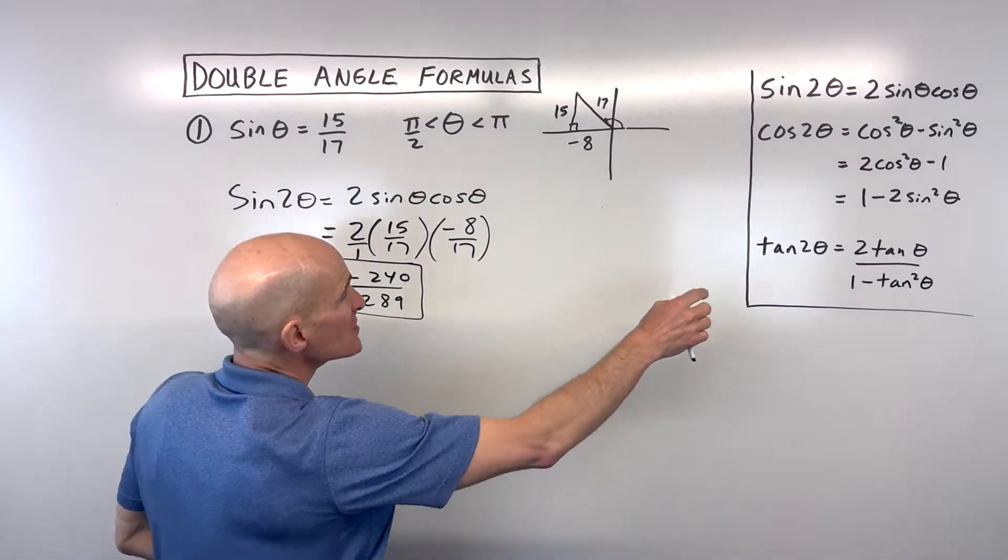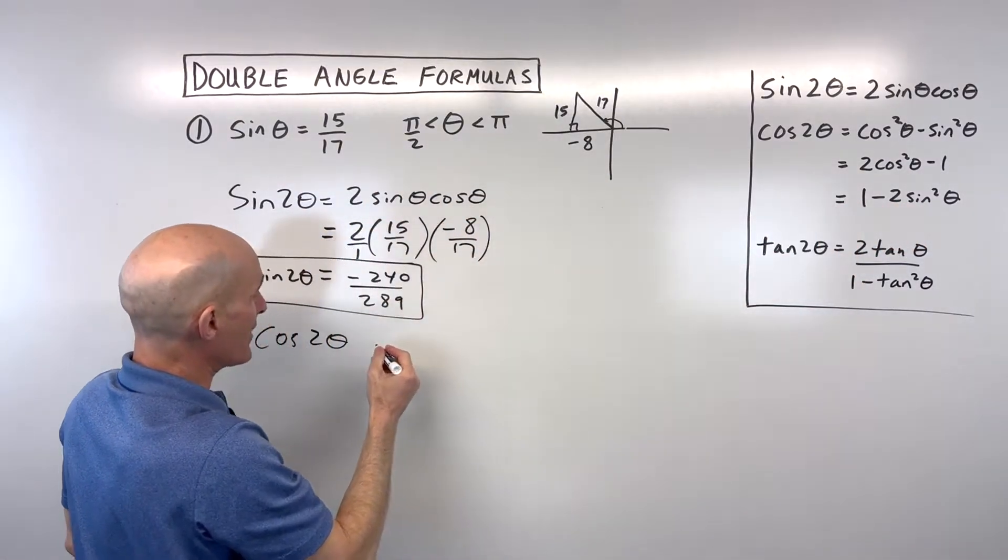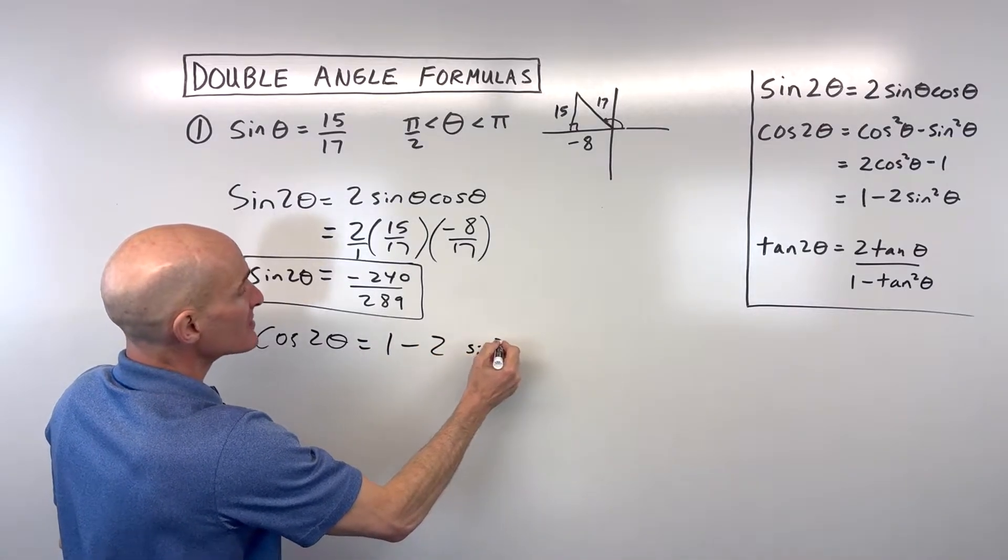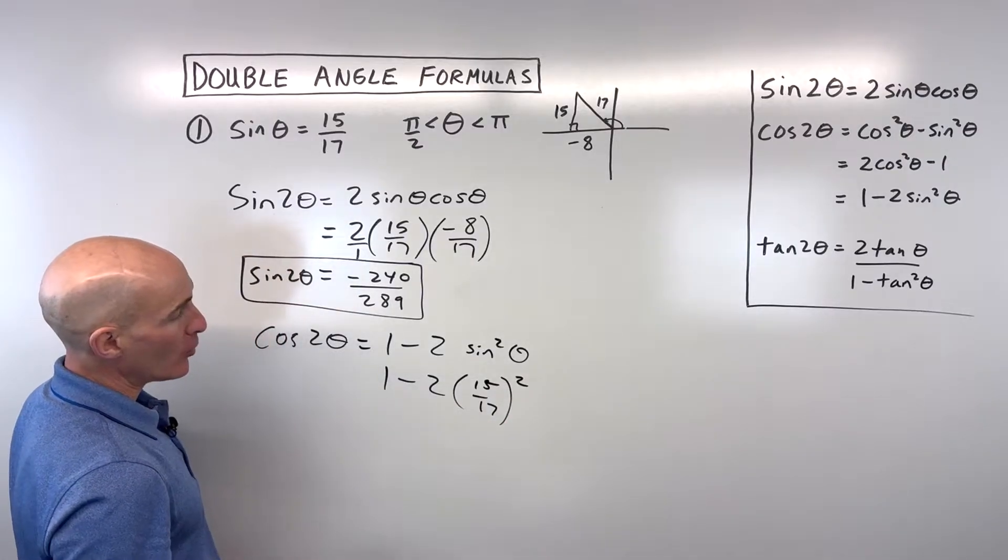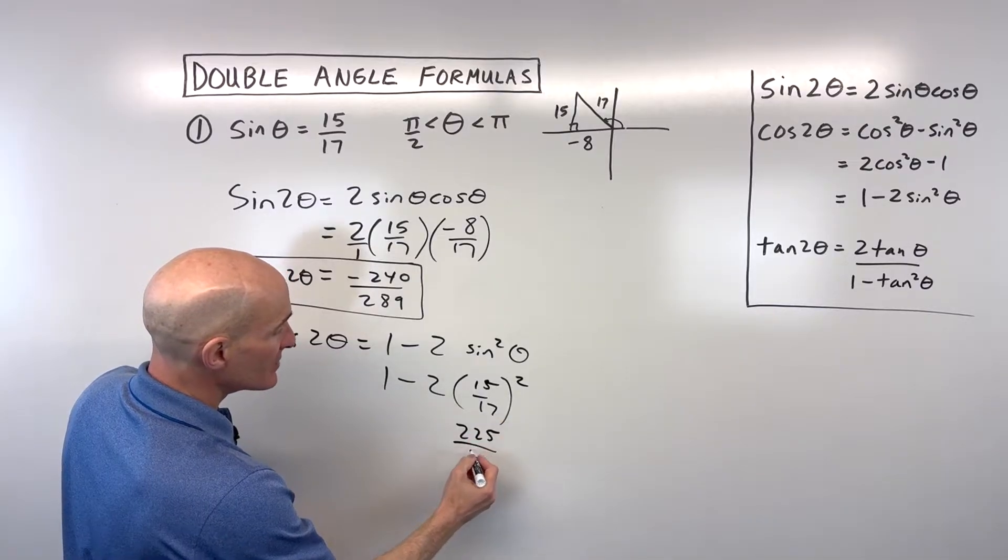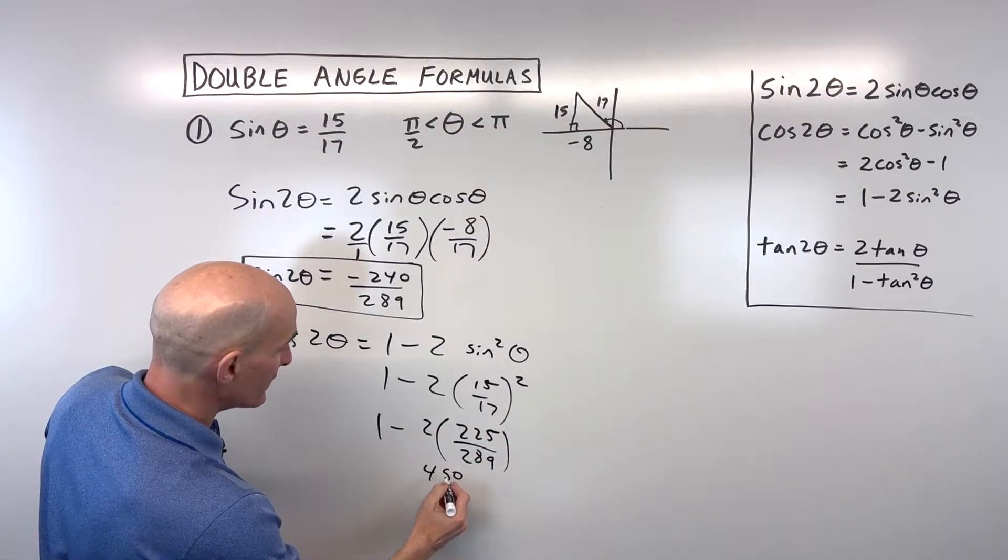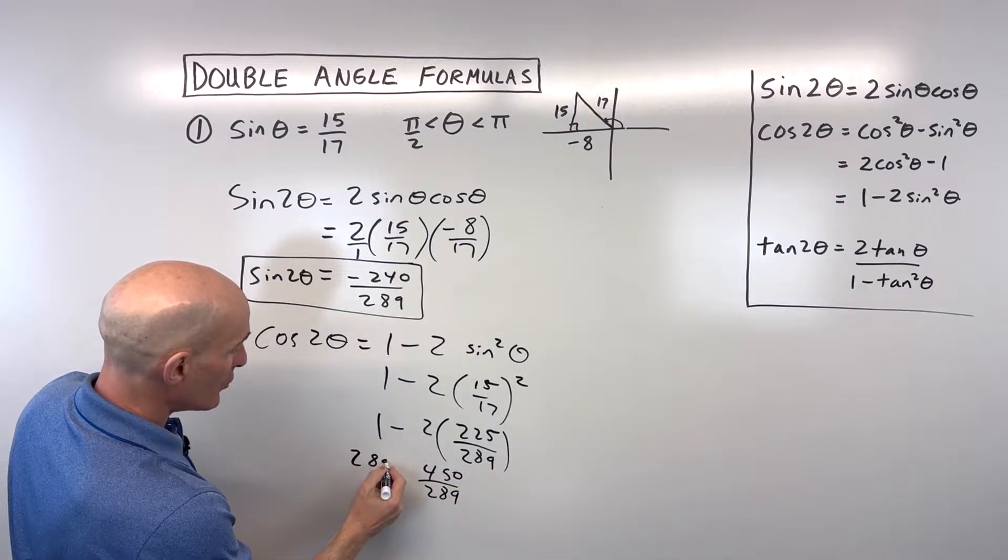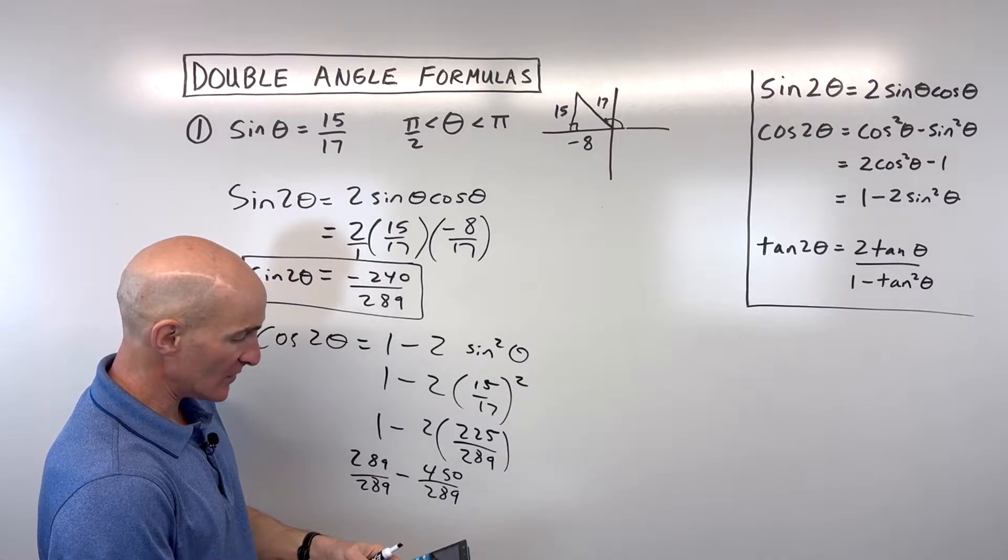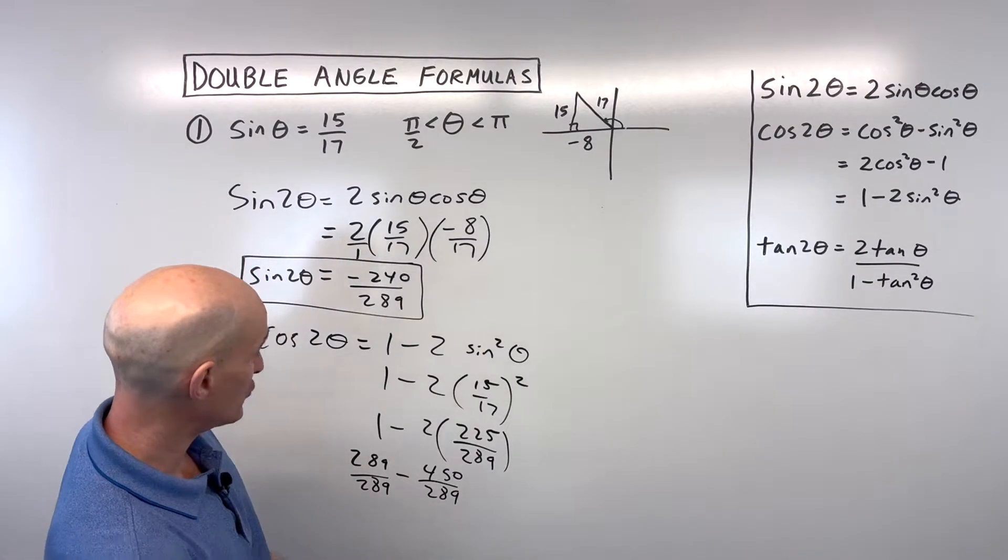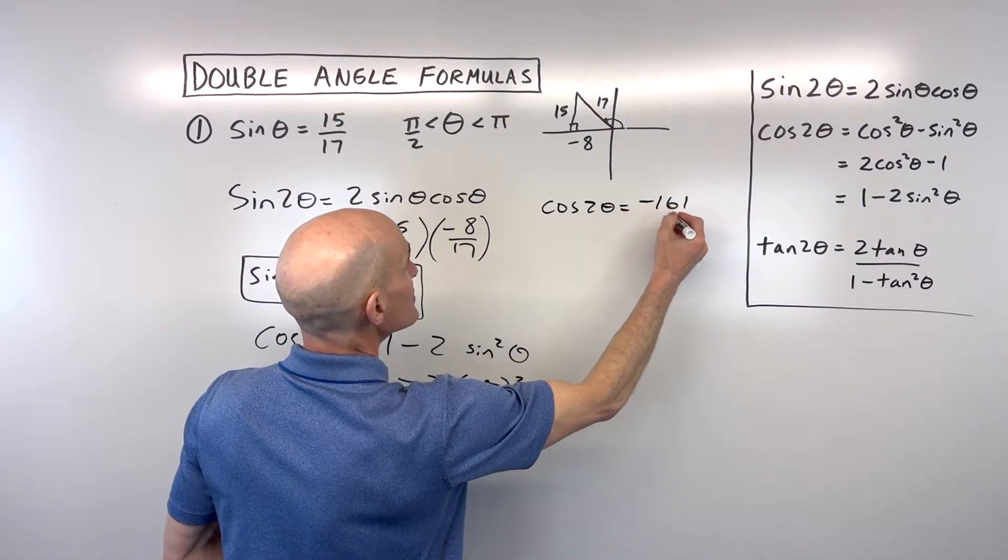In this problem, I'm going to use this last one because they already give us what the sine of single θ is. So I can just put that in place of the sine here and square it. So 1 - 2sin²θ, we know that sin θ is 15/17, and we're going to square that quantity. Squaring the numerator gives us 225. 17 squared is 289. 2 × 225 is 450. 1 can be rewritten as 289/289, because anything divided by itself is 1. Then 289 - 450 is negative 161/289. So cos 2θ equals negative 161/289.